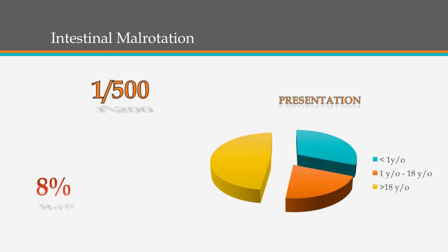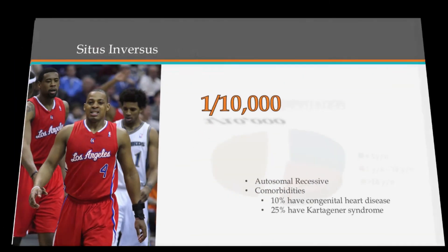Here's a breakdown of intestinal malrotation: about 1 in 500 people are born with it, and 8% of those born with it will be symptomatic. It used to be thought that everyone symptomatic for malrotation presented before a year old, but actually a lot of people get their symptoms in adulthood.